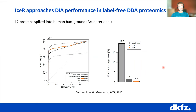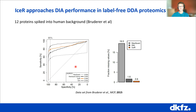We also compared ICER to DIA to see how close we could approach it. Using a dataset from a paper that was used to assess the performance of Spectronaut — almost failing to say the name there — the ROC curve shows ICER comes pretty close to Spectronaut's performance, and in terms of missing values it is even a bit lower.